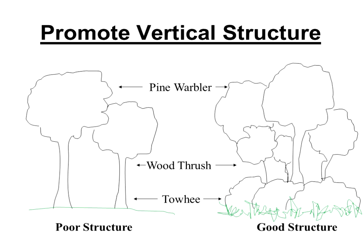So principle number one is to promote plant diversity. Principle number two is to promote vertical structure — the number of layers of plant material in your garden or habitat. On the right you see a graphical representation of a plant community with really high or complex structure — it has a ground layer of grasses and forbs, a shrub layer, a mid-story, and a canopy. On the left is a more simplified structure with only canopy. The left is typical of suburban and urban landscapes where we may have some canopy trees, but everything else is maintained, manicured, or mowed.